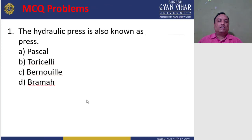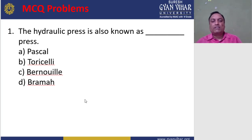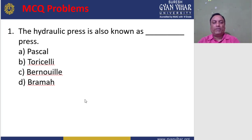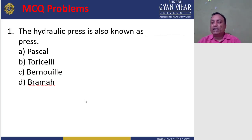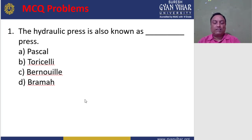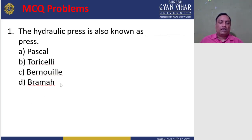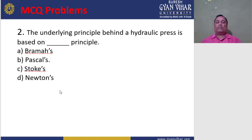Now moving to MCQ problems. Question 1: The hydraulic press is also known as the press named after whom? Options: a) Pascal, b) Torricelli, c) Bernoulli, d) Brahma. The correct answer is d — Brahma press — because it was invented by Joseph Bramah from England, and hence it is named after him.